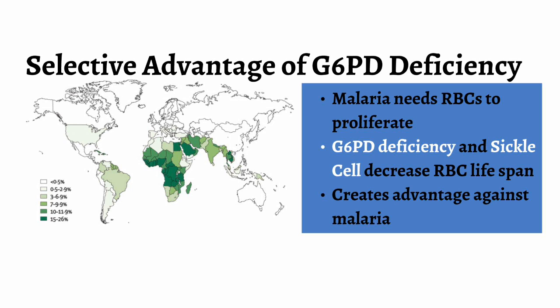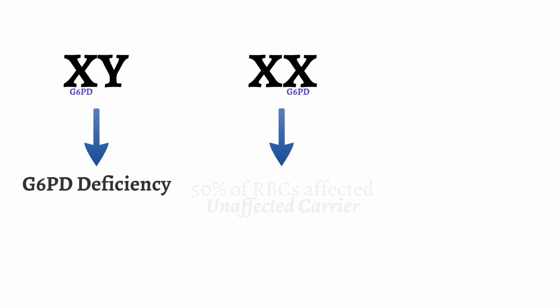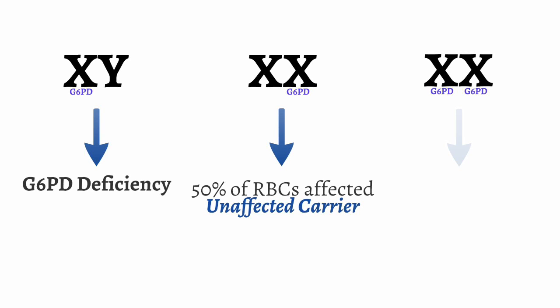G6PD is passed through the X chromosome. Males tend to be more affected than females, as males only have one X chromosome. So if they receive an affected X chromosome with G6PD deficiency, they will have the disease. On the other hand, females have two X chromosomes, so if they receive one affected X chromosome, only 50% of their RBCs may be affected. Generally, females with only one affected X chromosome will largely be asymptomatic.